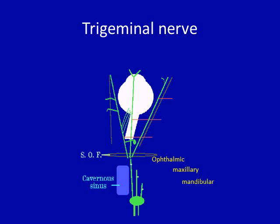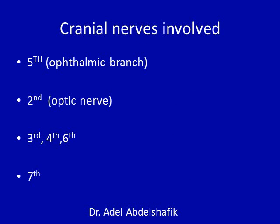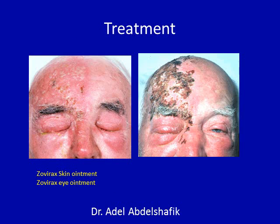This is a reminder of the anatomy and the nerves. The nasociliary nerve supplies the inside of the eye and at the same time supplies the tip of the nose. Other nerves can be affected in herpes zoster, including the second cranial nerve causing optic neuritis, motor supply to the muscles of the eye, and the facial nerve. Treatment for herpes is acyclovir skin ointment for the skin and acyclovir eye ointment for the cornea. If there is iritis, then steroids should also be given.